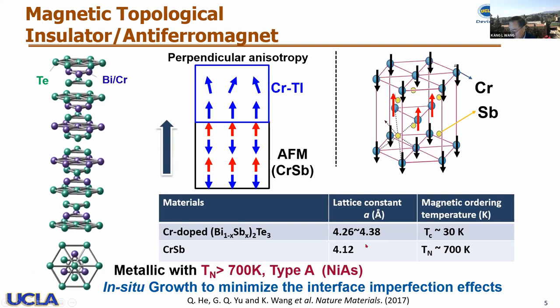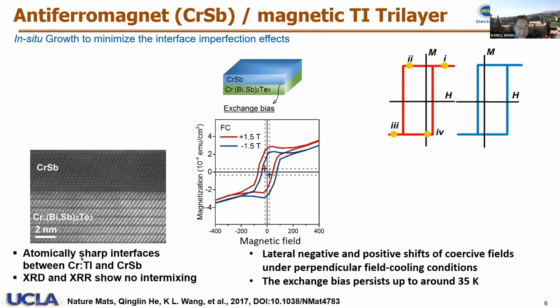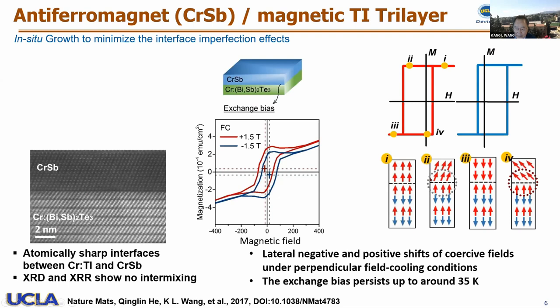The lattice is quite well-matched. The Néel temperature is quite high, around 700 K. TEM shows up very nicely as anticipated. Looking at the top layer of chromium antimony over BST, we see the exchange bias — both positive field bias and negative field bias — which can be explained by the exchange coupling to the AFM. The exchange bias persists up to about 35 K.